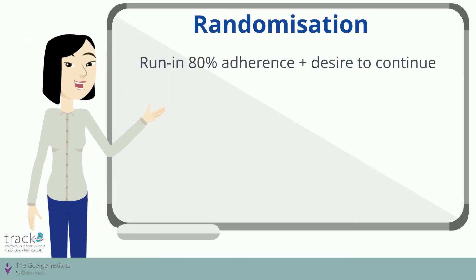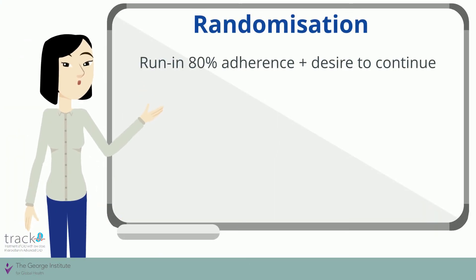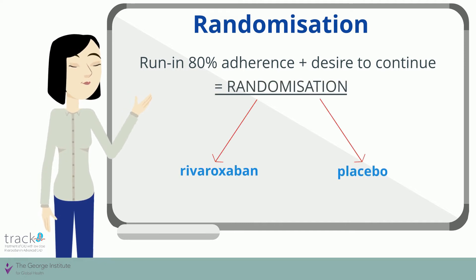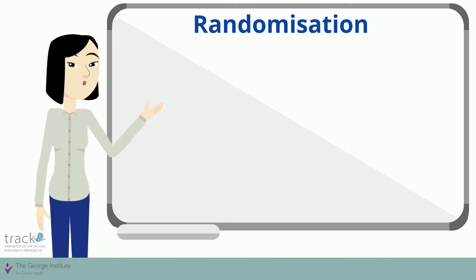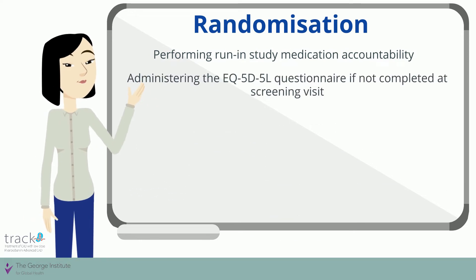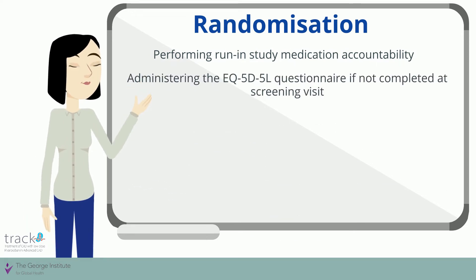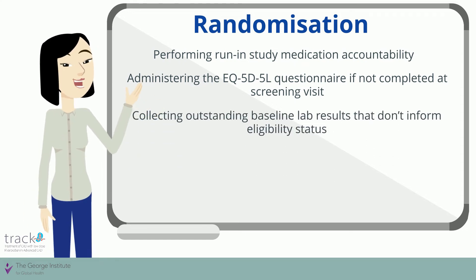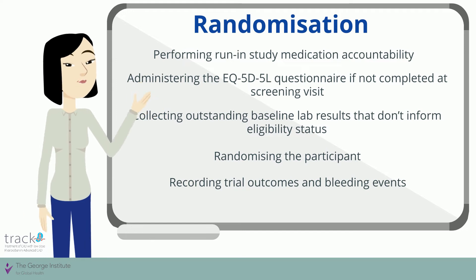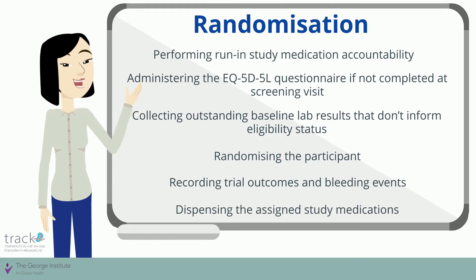Participants who complete the run-in period with at least 80% adherence and who wish to continue in the study will be randomized to rivaroxaban or the matched placebo. Randomization activities include performing run-in study medication accountability, administering the EQ5D-5L questionnaire if not completed at the screening visit, collecting outstanding baseline lab results that don't inform eligibility status, randomizing the participant, recording trial outcomes and bleeding events, and dispensing the assigned study medications.